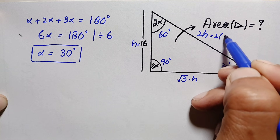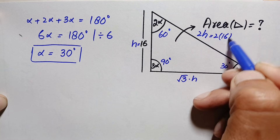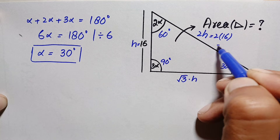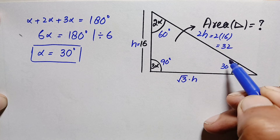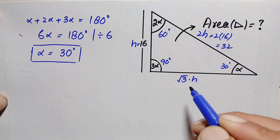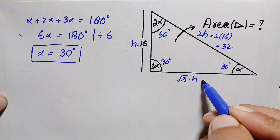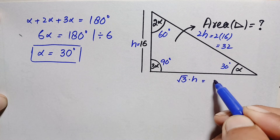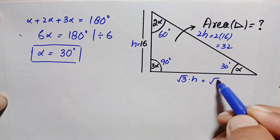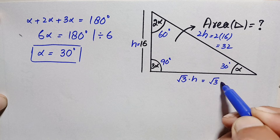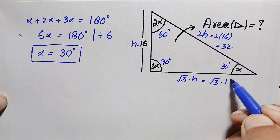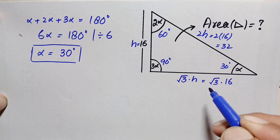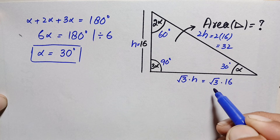Substituting h = 16: the hypotenuse becomes 2 × 16 = 32 units, and the other side becomes √3 × 16 = 16√3 units.